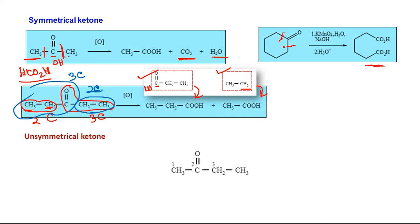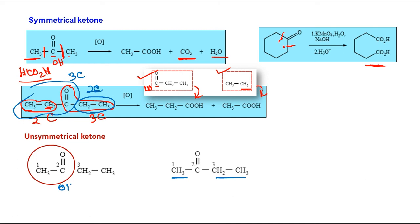Next is unsymmetrical ketone. In this example, one side has one carbon and the other side has two carbons. We number these three carbons and consider both possibilities: breaking bond 1-2 and bond 2-3. For the 2-3 C-C bond cleavage, we get the CH3CO fragment. Adding one OH gives CH3CO2H — acetic acid. From the other side, converting the CH2 group to CO2H gives acetic acid again — so two molecules of acetic acid.